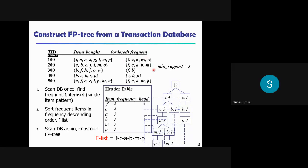The next step is scanning the database again — but now for the second time, we are scanning the transformed database, not the original database. While scanning the transformed database for the second time, we are constructing the FP tree. So we are mapping the entire transformed database into the FP tree structure.